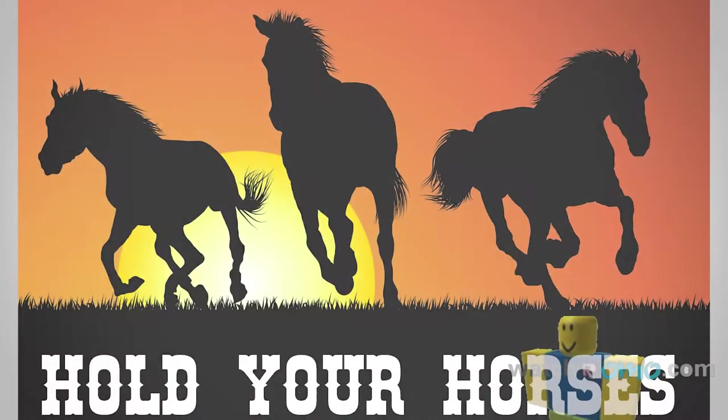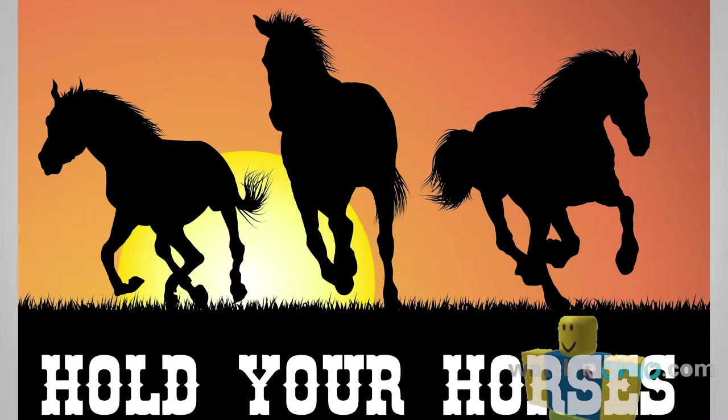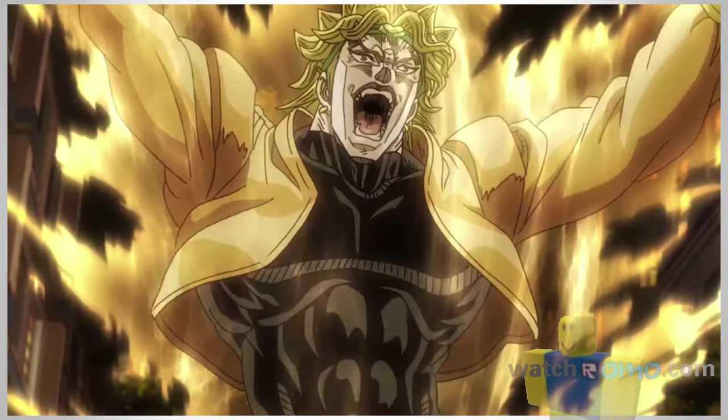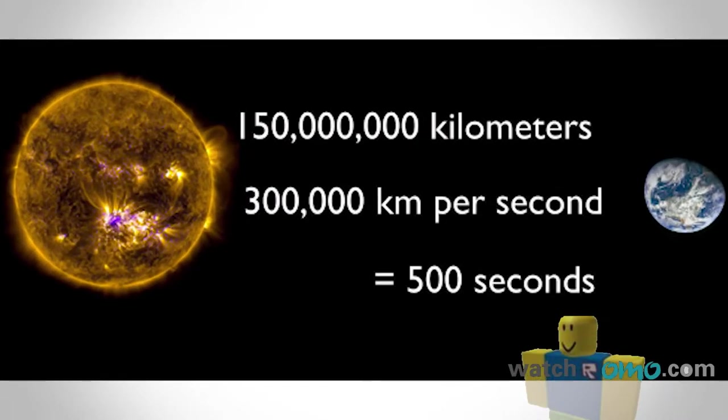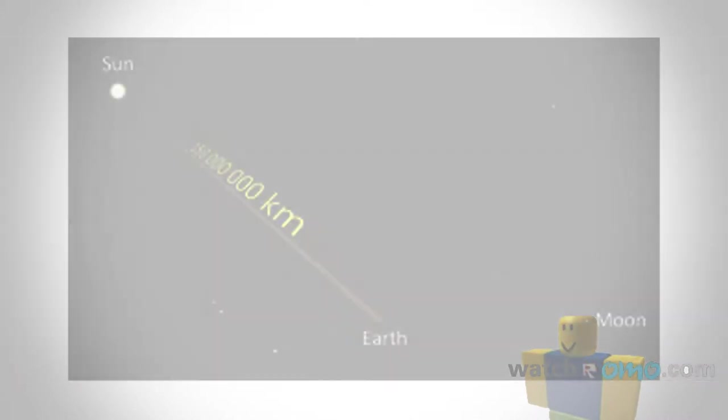Hold on to your horses, because this fact is going to hit you harder than a Zawarudo on a Sunday. Did you know that in around 8 whole minutes of traveling 300,000 kilometers per second, light travels from the Sun's surface to the Earth? And I thought eating an entire lasagna in 8 minutes was impressive.